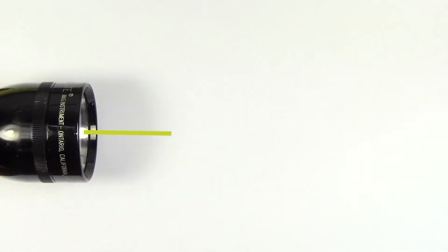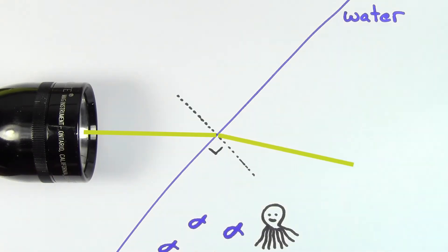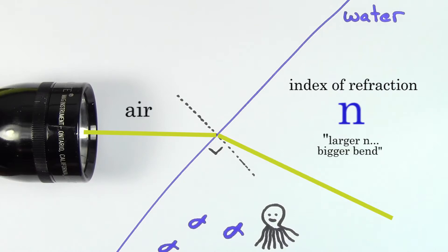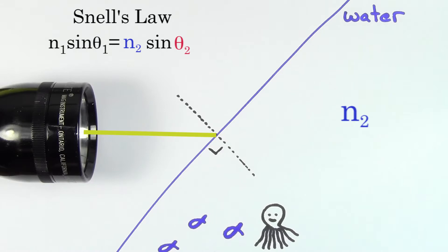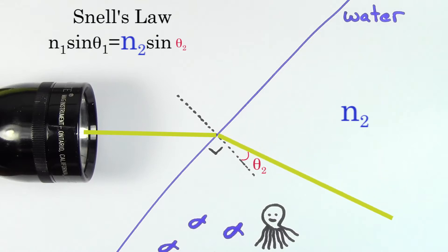Check out this ray of light. When it enters a new medium like water, its path will bend. And the larger the index of refraction of the new medium, the more the light will bend from its initial direction that it had in the air. This follows from Snell's Law, since if the index of refraction is larger, the angle of the refracted light must be smaller, and in order to have a smaller angle from the normal line, the light ray has to bend more from its initial direction.